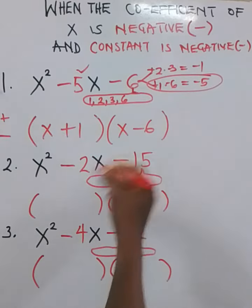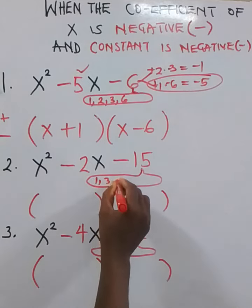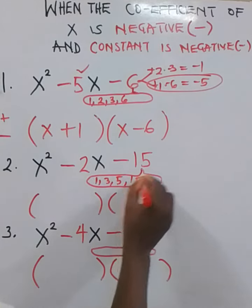Let's see the second one. Factors of 15, 1, 3, 5 and 15 itself.